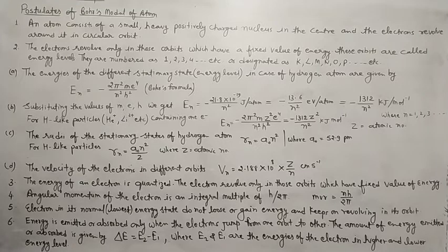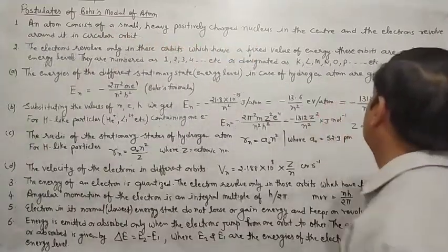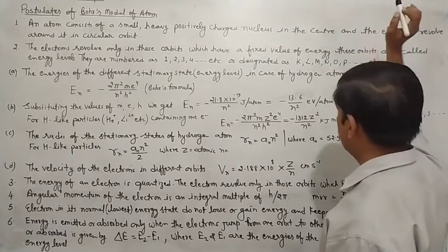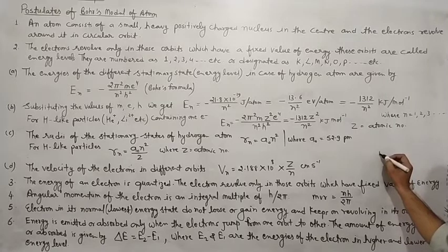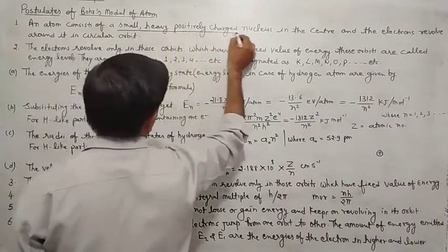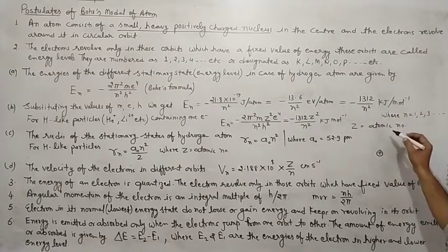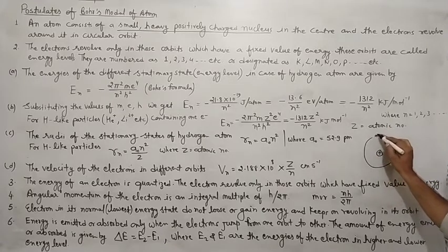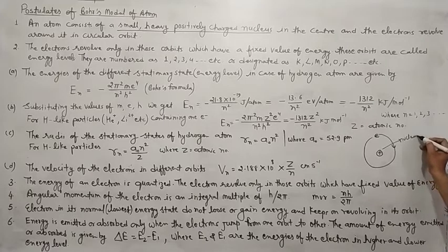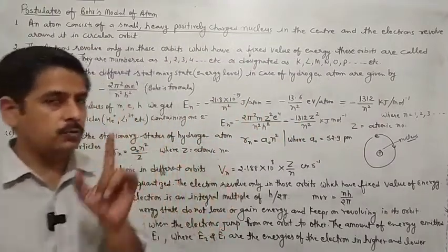Bohr ne apne model mein kuch postulates diye the. The first postulate was: an atom consists of a small, heavy, positively charged nucleus in the center, and electrons revolve around it in a circular orbit. First postulate mein kaha gaya ki bilkul center mein ek nucleus hota hai, aur electron ek circular orbit ke andar is nucleus ke charo taraf revolve kerta rehta hai. So this is nucleus and this is electron. Electron revolves round the nucleus and nucleus is situated in the center. So it was the first postulate.